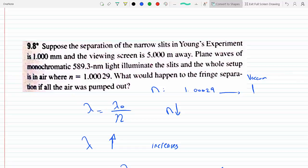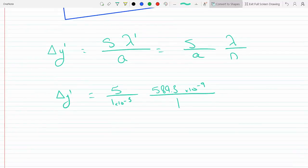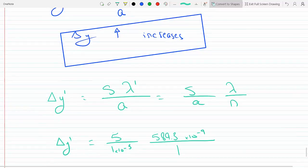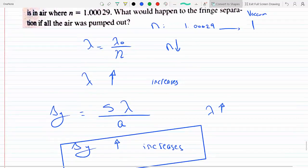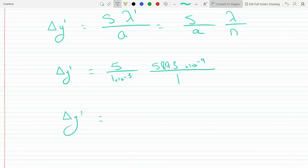If we suck the air out, then the wavelength will be slightly larger. It will go back to 589.3 and n in vacuum is one. And so we will get the distance of separation to be, if we plug this on the calculator...